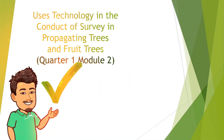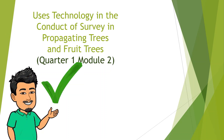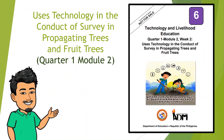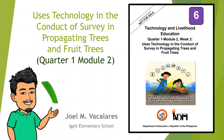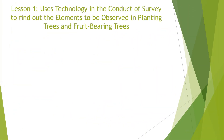Quarter 1, Module 2: Uses Technology in the Conduct of Survey in Propagating Trees and Fruit Trees. Lesson 1: Uses Technology in the Conduct of Survey to find out the elements to be observed in planting trees and fruit-bearing trees.